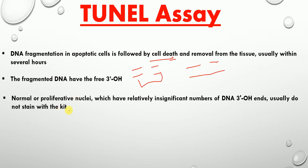Both kinds of fragmented DNA have free 3' hydroxyl groups, whereas normal or proliferative nuclei have relatively insignificant numbers of DNA 3' hydroxyl ends and usually do not stain with the kit. So the key difference between apoptotic and non-apoptotic cells is that apoptotic cells will have either double-stranded or single-stranded DNA breaks, with free 3' hydroxyl groups.